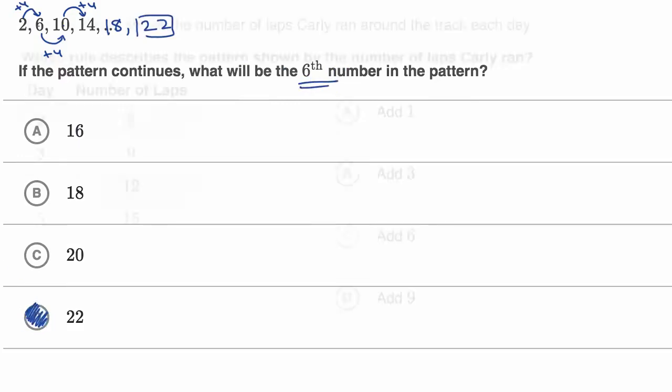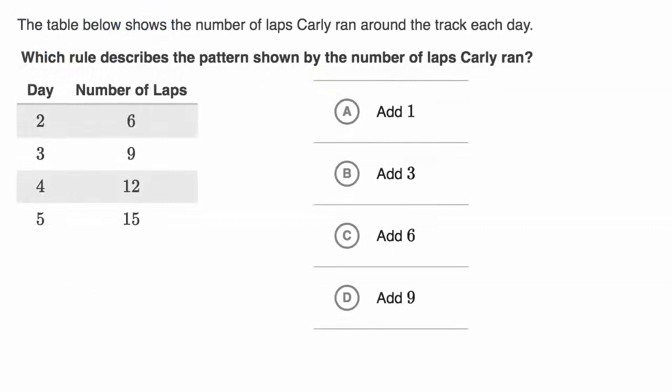Let's do another example. Here, we're told the table below shows the number of laps Carly ran around the track each day. Which rule describes the pattern shown by the number of laps Carly ran? So like always, pause this video and see if you can work on this.